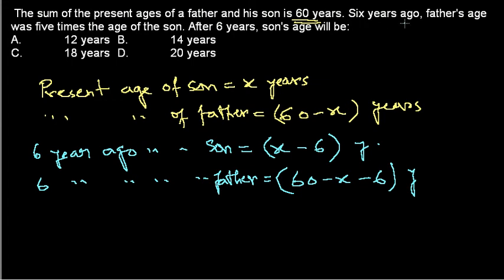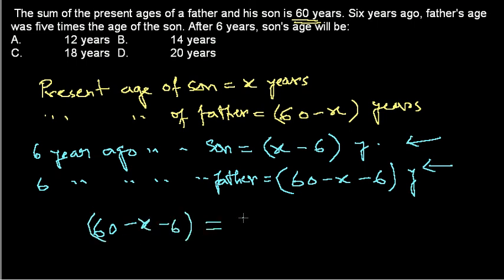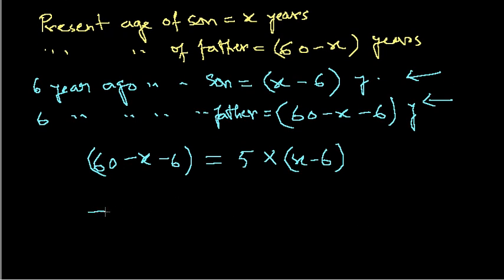So what is the equation? Six years ago, the father's age was 5 times the age of the son. So father's age was 60 minus x minus 6, and this was 5 times the age of the son. The age of the son was x minus 6 six years ago. So this is the case. What we get here: 54 minus x equals 5 times (x minus 6).